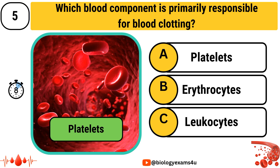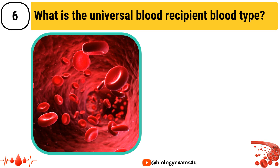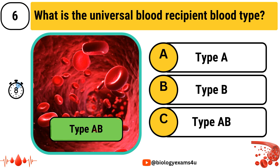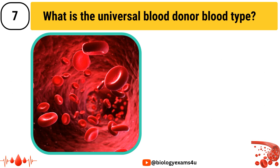What is the universal blood recipient blood type? Option A: Type A, Option B: Type B, Option C: Type AB. The answer is Type AB.